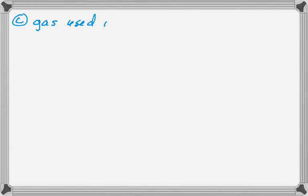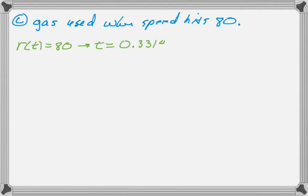And part C, we want to know how many liters of gas were used to get to the speed of 80. Having dealt with the units so much, you can get through this one a little more quickly. So we need the speed to be 80, so that's R of T equals 80. So we use our calculator to solve that, and we get T is 0.33145. And I'm going to store that as A.